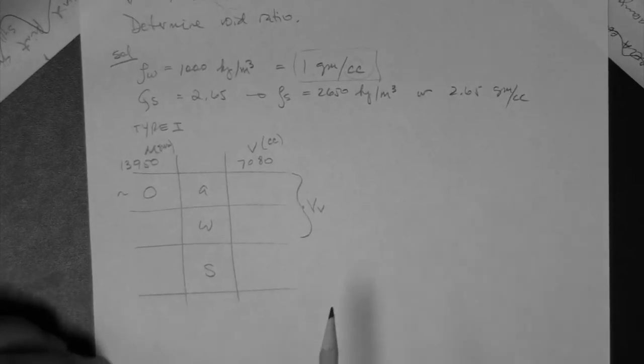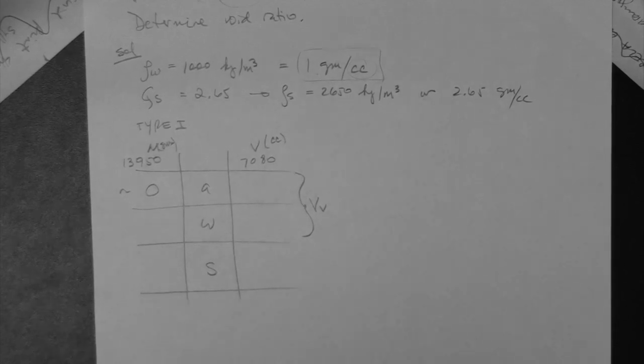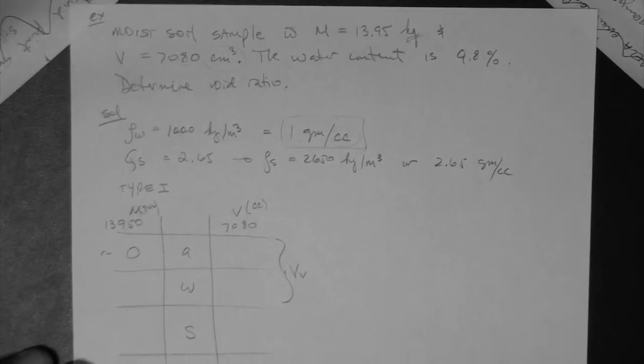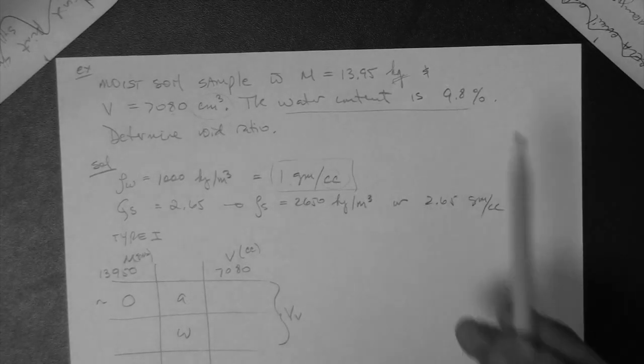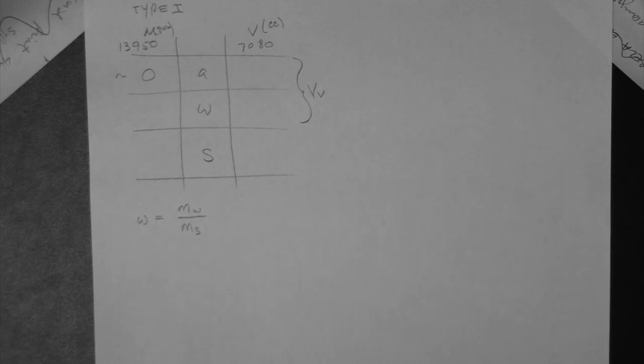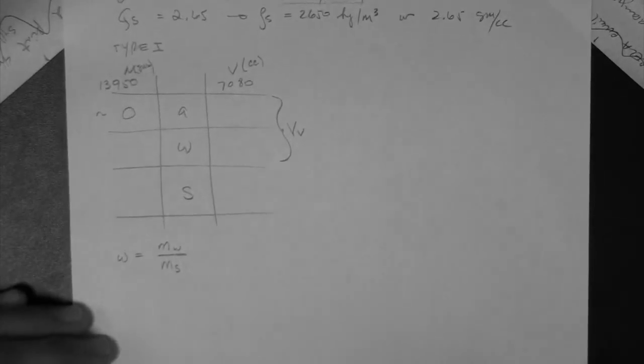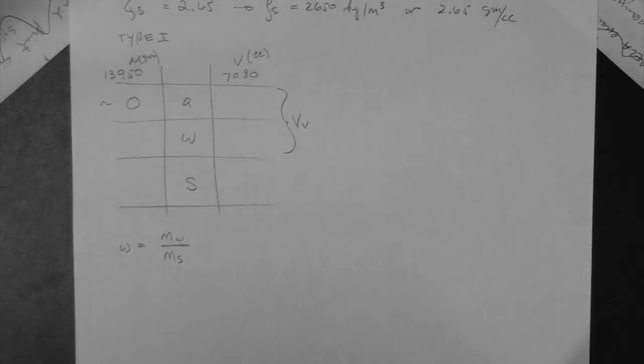We proceed to use the water content. The water content w equals mass of water over mass of solids — you must know this equation by memory, it is a definition. We know w equals 9.8%, and we always operate in decimal format, so 9.8% becomes 0.098. We have one equation with two unknowns, so we need to use the phase diagram further.